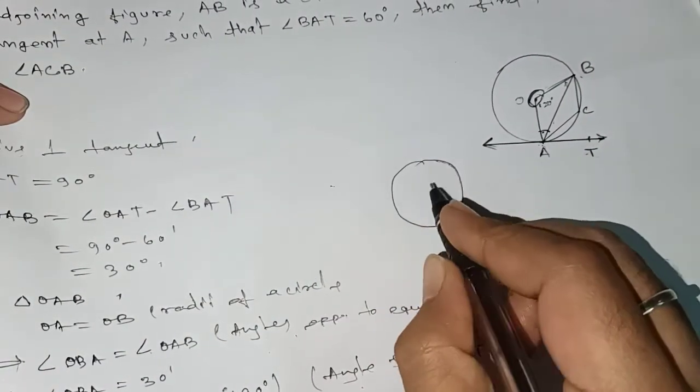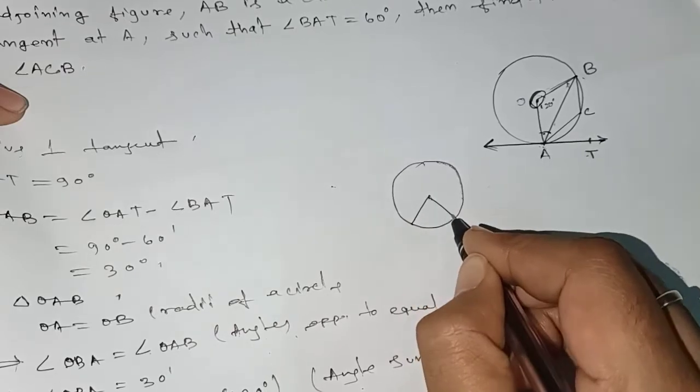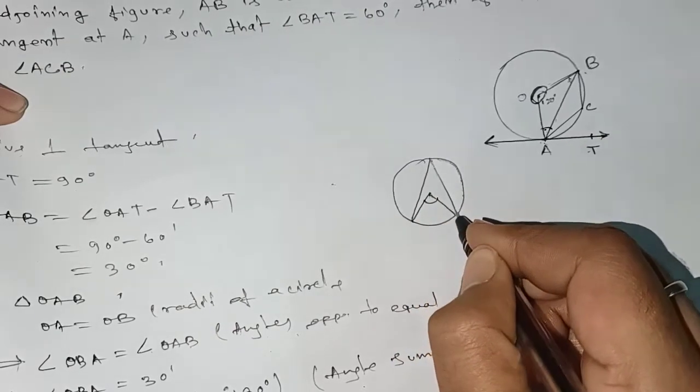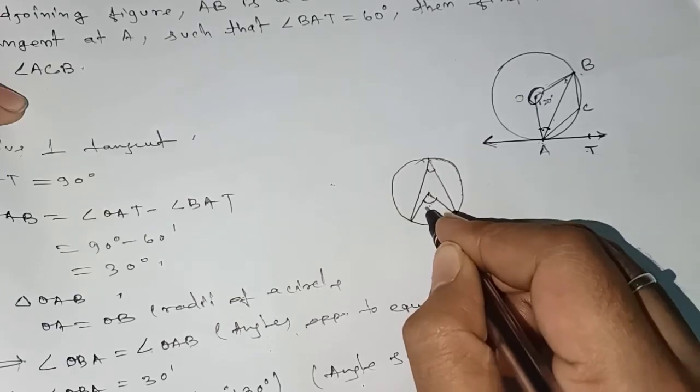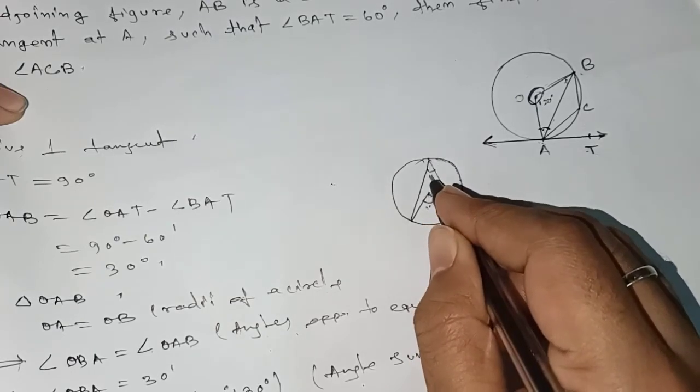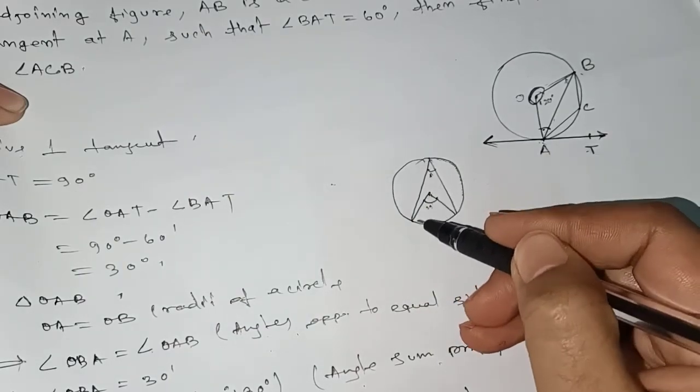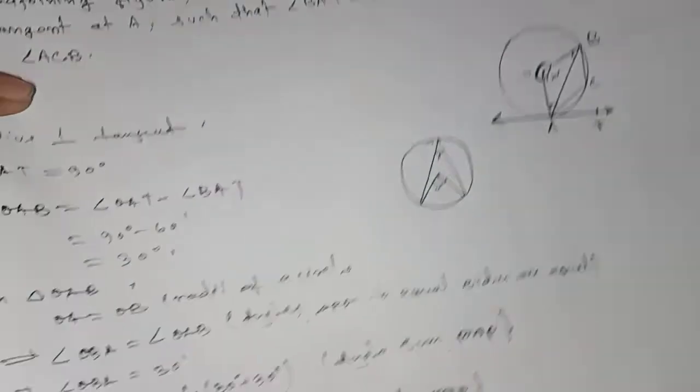There is a center and there is an angle at any part of the circle. The center angle is double the angle at the circumference. This means the angle at the circumference will be half of the angle at the center.